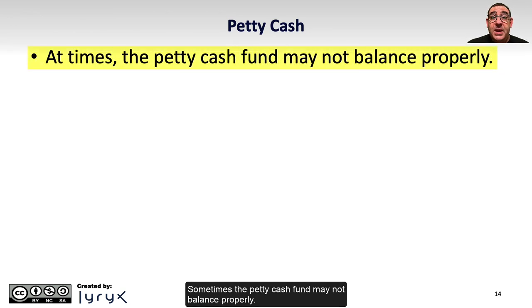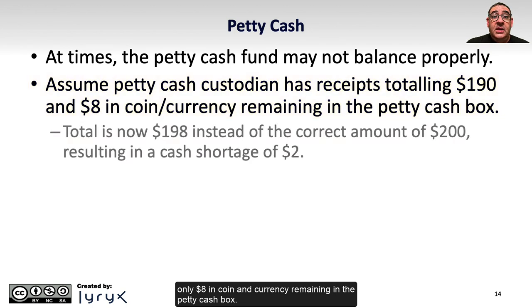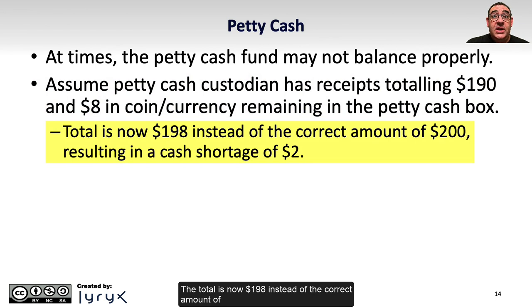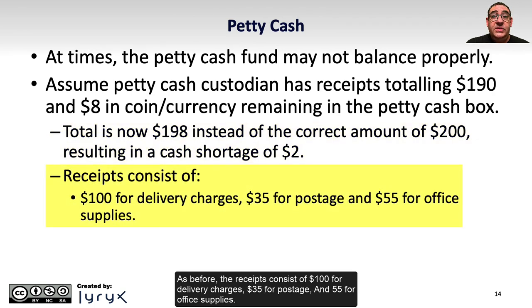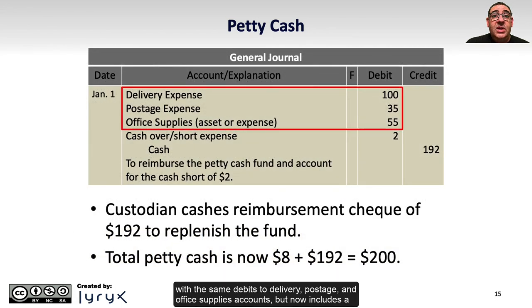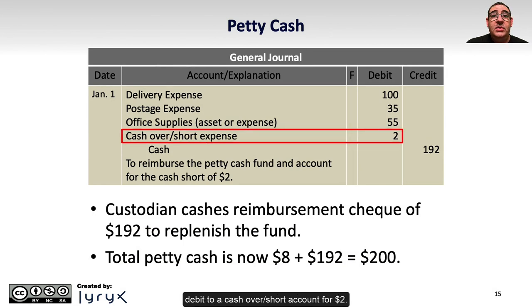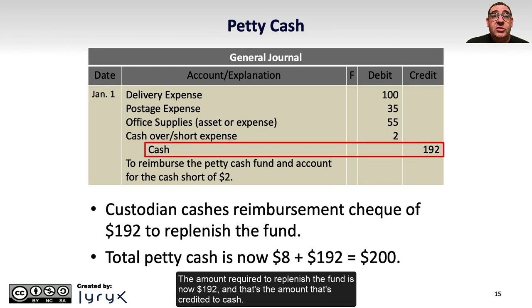Sometimes the petty cash fund may not balance properly. Assume that the petty cash custodian has receipts of $190 but only $8 in coin and currency remaining in the petty cash box. The total is now $198 instead of the correct amount of $200, resulting in a cash shortage of $2. The receipts consist of $100 for delivery charges, $35 for postage, and $55 for office supplies. The custodian submits the receipts to the accountant who records an entry with the same debits to delivery, postage, and office supplies accounts, but now includes a debit to a cash over short account for $2. The amount required to replenish the fund is now $192, and that's the amount credited to cash.